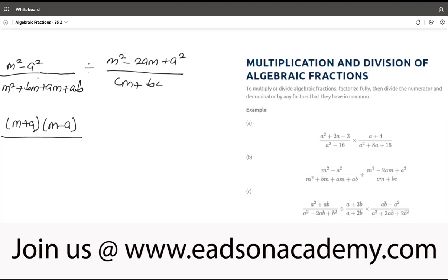So I will leave it with m plus b. So if I group this 2 by 2, m is common there. So if I factor m, I have m into m plus b, then plus this also, if you group it 2 by 2, a will be common. If I have a into m plus b divided by...